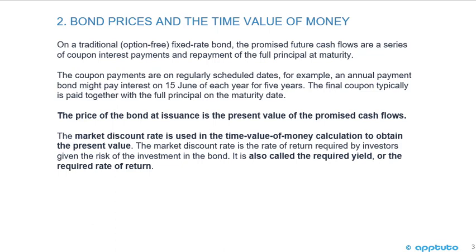The coupon payments are on regularly scheduled dates. For example, an annual payment bond may pay interest on June 15th of each year for five years. The final coupon is typically paid together with the full principal on the maturity date. The price of the bond at issuance is the present value of the promised cash flows — that's it. The price of the bond is the present value of the promised cash flows.